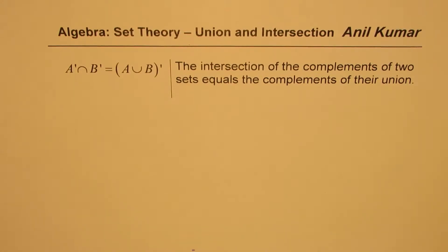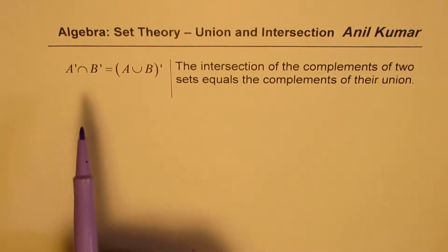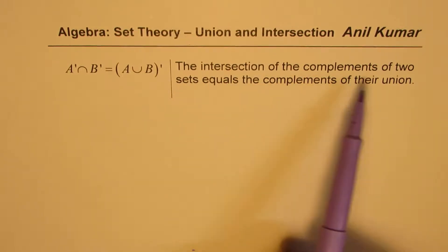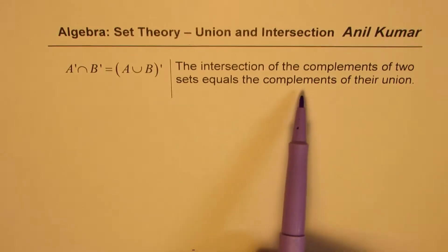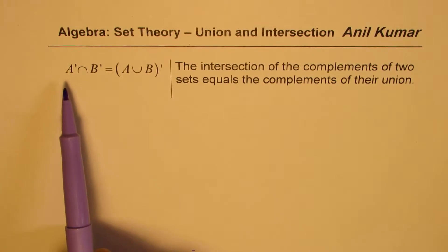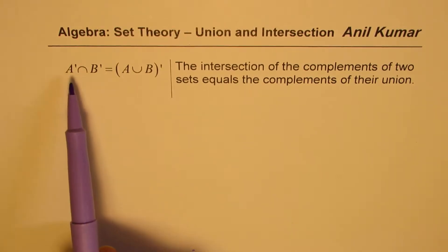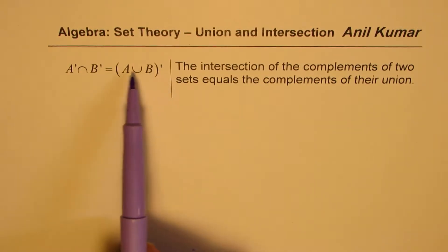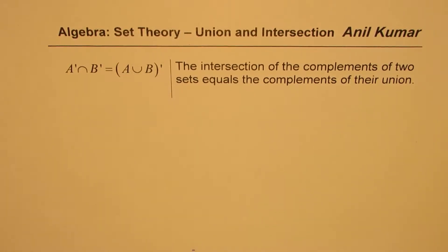I'm Anil Kumar, welcome to my series on set theory. We will actually prove a very important identity for set theory which relates union and intersection. The intersection of the complements of two sets equals the complement of their union — mathematically, the intersection of complements of A and B is equal to the complement of the union of A and B. That is what we need to prove.